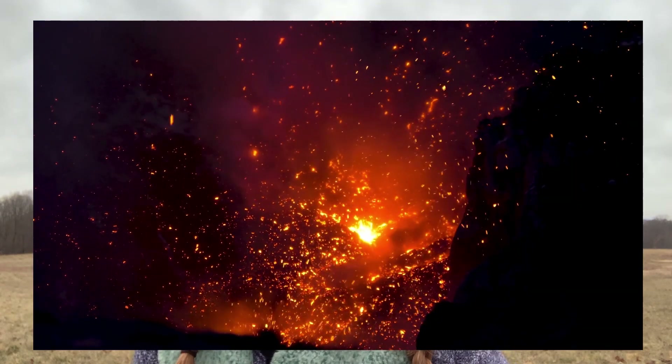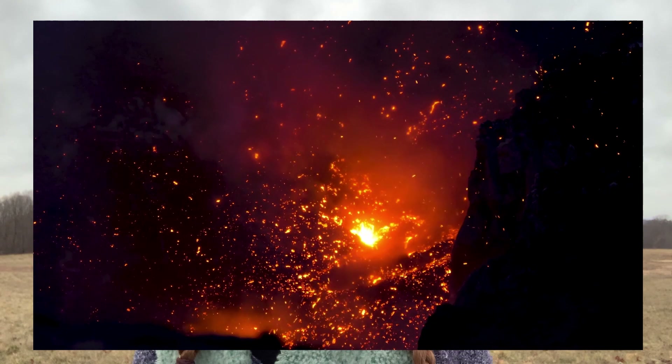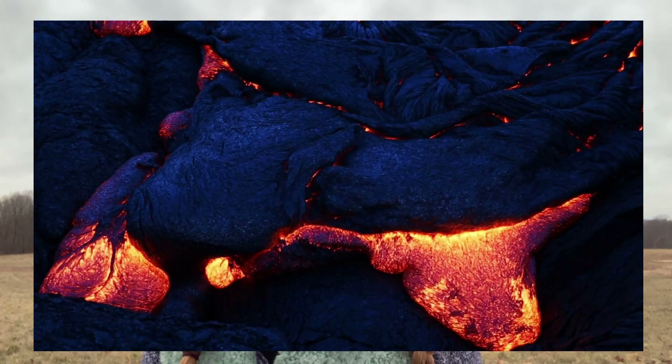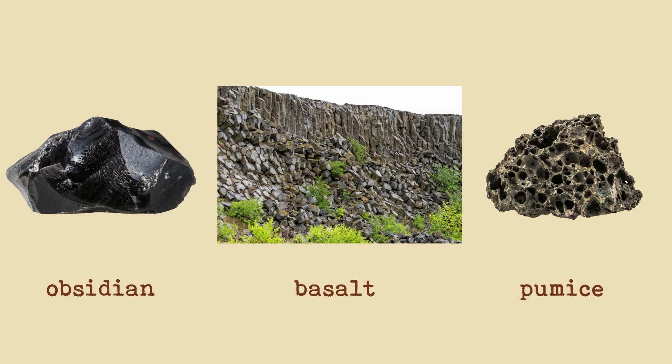Igneous rocks form because of volcanoes. A volcano can have magma below the surface and above the surface. When magma reaches the surface it's called lava. When lava cools at the surface it forms an extrusive igneous rock, and when magma stays underground and cools there it's called an intrusive igneous rock. The type of igneous rock that forms isn't only dependent on whether it's at the surface or beneath the surface, but also the type of magma.